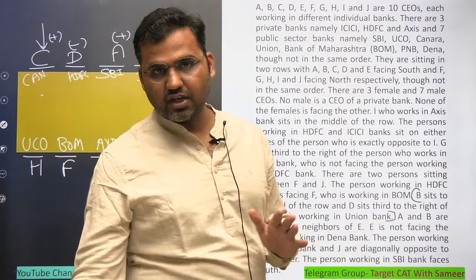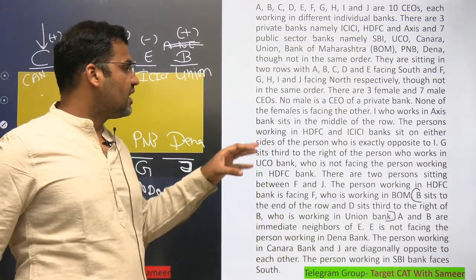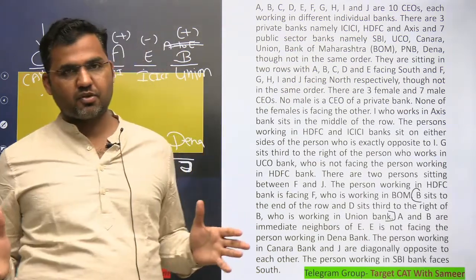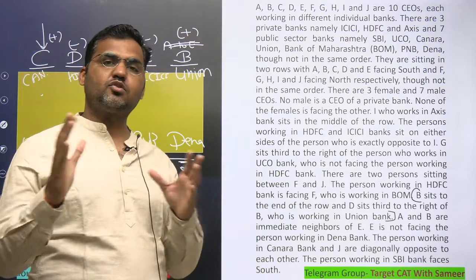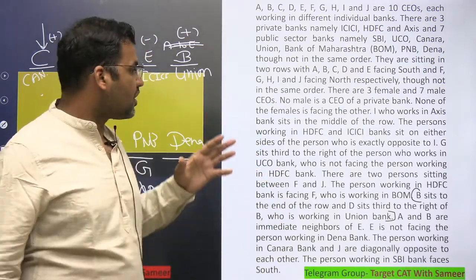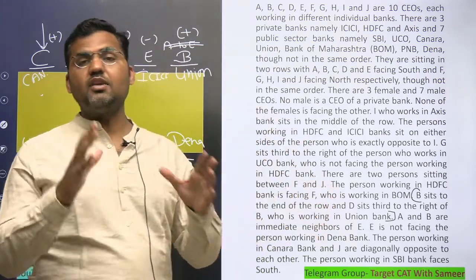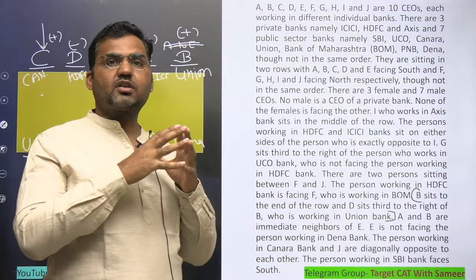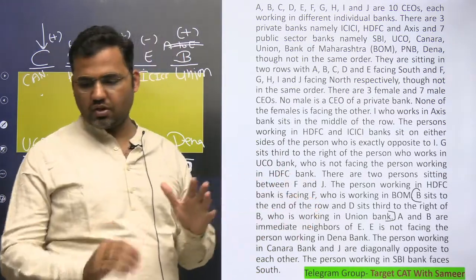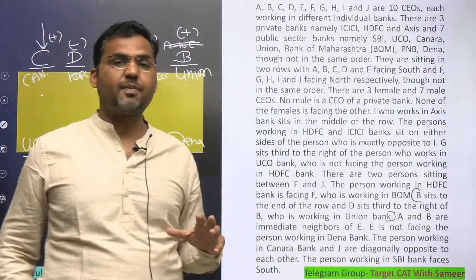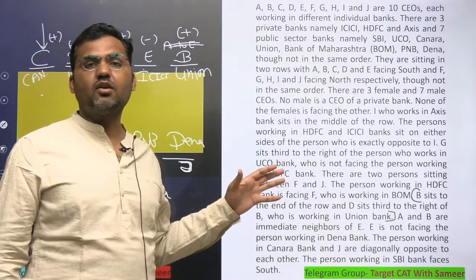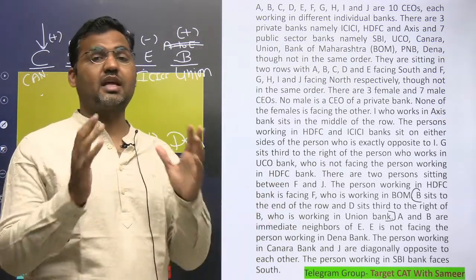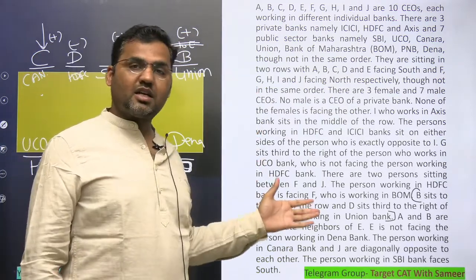This is how you solve a sitting arrangement set with more than two or three variables within five minutes — by knowing exactly which points to use first. If you make multiple possible cases, it takes 15 to 20 minutes. But if you pick the right statement first and focus on related clues, you avoid making cases entirely. Pick points related to each other that don't require case-making.